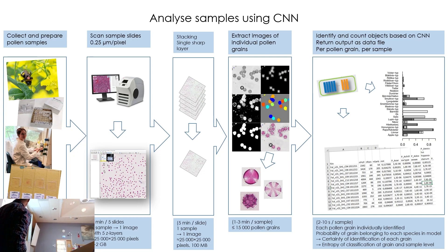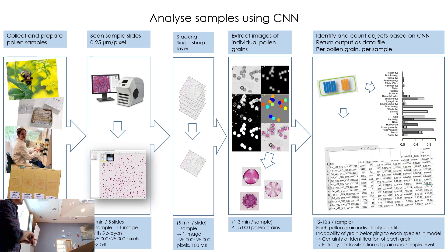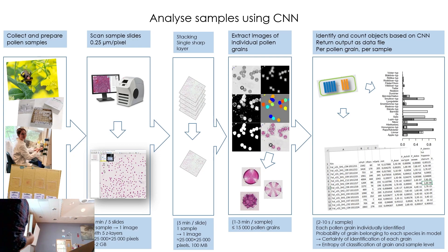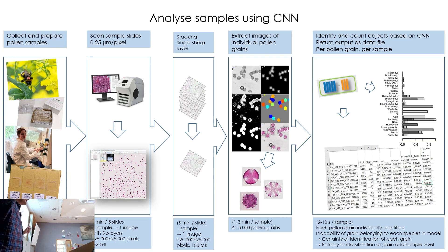When we're classifying, we do the same pipeline. We typically collect pollen samples from a bumblebee — we take their pollen load when they come back to the hive. We make a microscope slide, scan it, stack it, segment it, and then classify. Each sample can have anywhere from a few pollen grains up to 15,000 in one slide. For each one, we get a vector of probabilities that it belongs to each species.